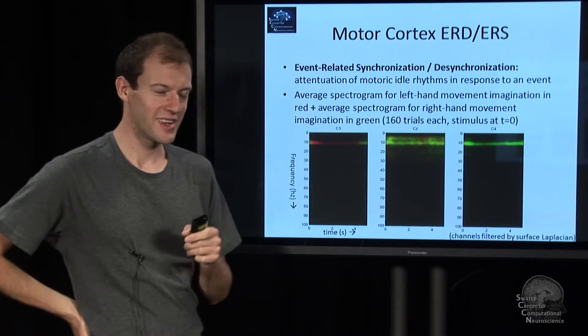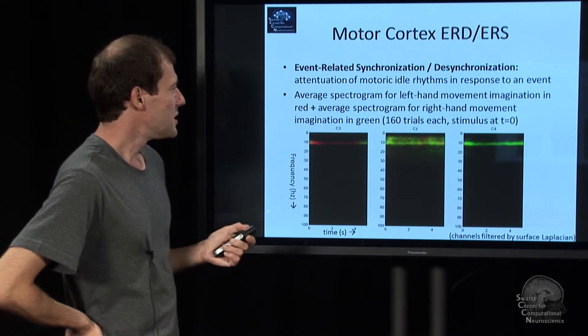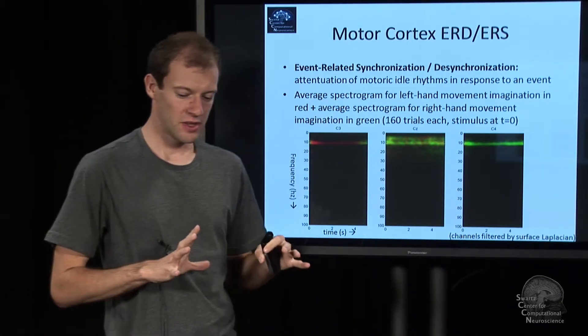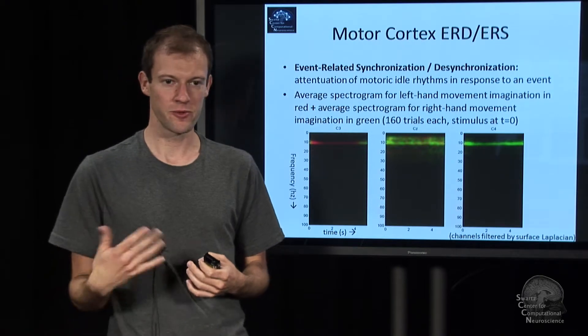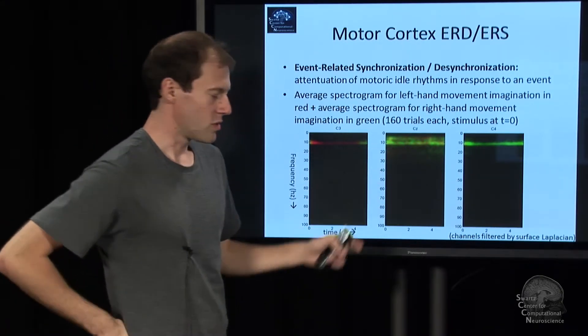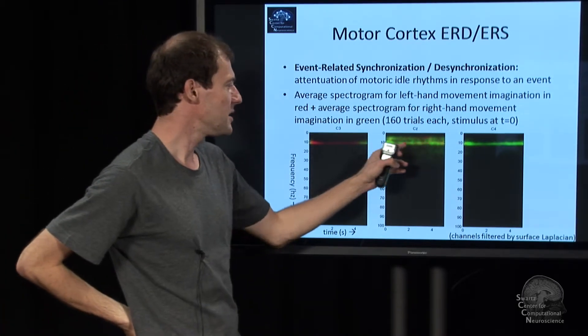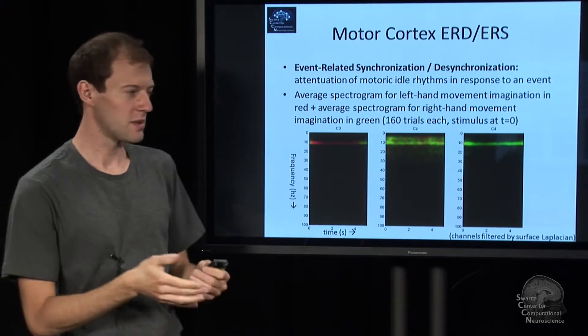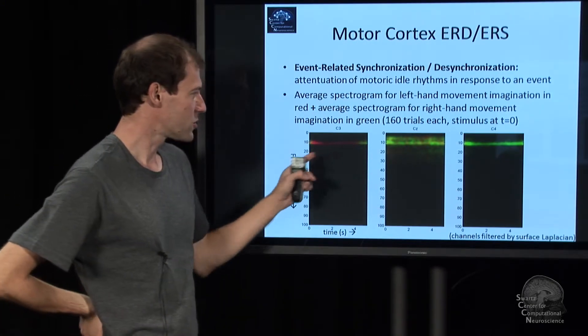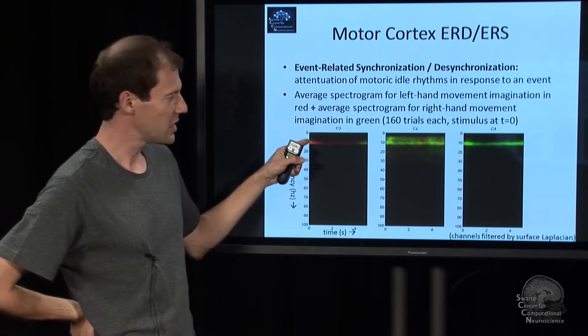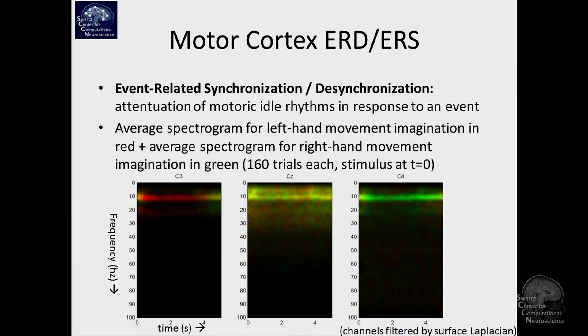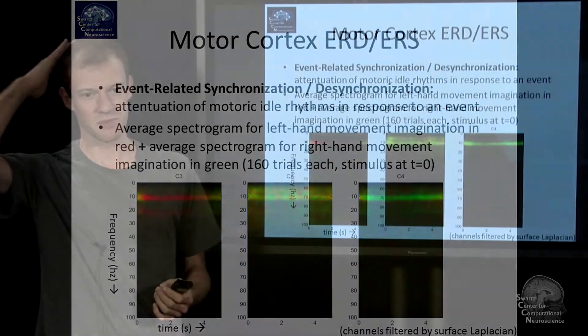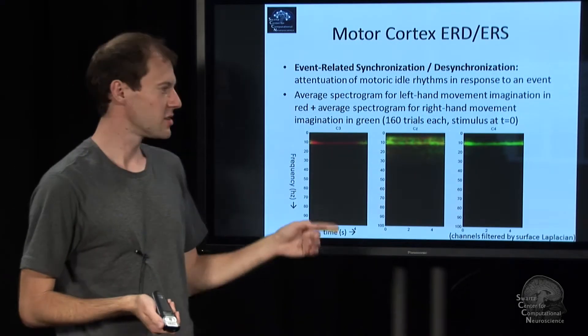Now, what do the colors mean? That's actually interesting. We're showing the power in the conditions where the person is imagining the left hand movement in red, and the power where the person is imagining the right hand in green. Over the middle electrode here, it tends to be yellow, so equal amounts of red and green. But what's interesting is over C3, one of the two colors, namely green, goes to zero basically. In one of the conditions, the power at 10 hertz breaks down. The idle rhythm breaks down because the person engages some tissue in their cortex to imagine this movement. In the other condition it stays, so that's why this is red.